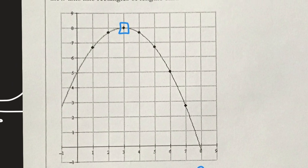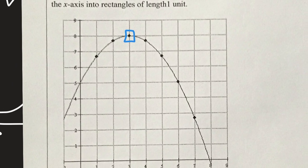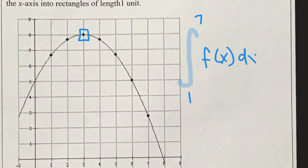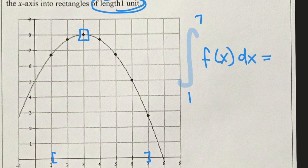We're approximating, so counting on our fingers is going to be just fine. We are told to find the area from 1 to 7 — that's our interval. So we're finding the integral from 1 to 7 of f(x) dx. We're going to use the left-hand endpoints and break the interval into rectangles with 1 unit of width, making 1, 2, 3, 4, 5, 6 rectangular areas.